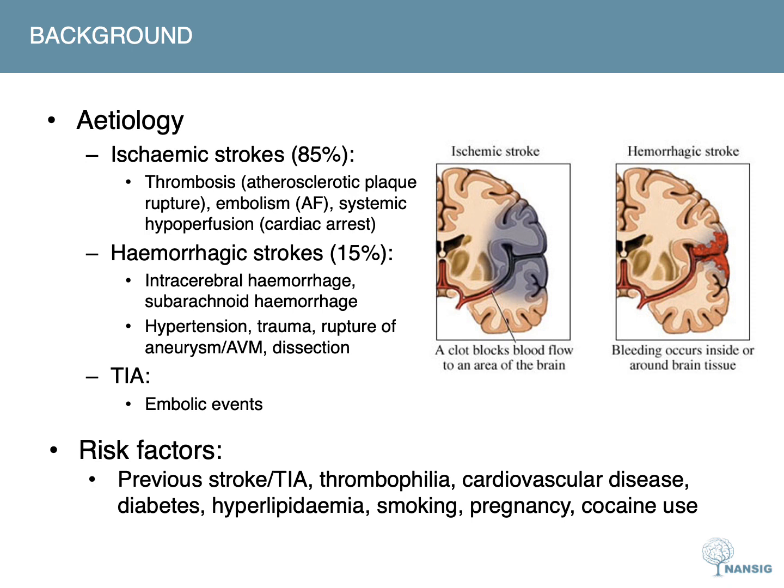There are various causes of stroke, and strokes are classified by their mechanism of neurological dysfunction. Ischemic strokes are caused by inadequate blood supply to an area of CNS tissue and account for around 85% of cases. Ischemia can result from thrombosis, where a blood clot forms locally within a cerebral blood vessel such as due to atherosclerotic plaque rupture, or from embolism such as from the heart due to atrial fibrillation. Global cerebral ischemia can also result from systemic hypoperfusion due to cardiac arrest.